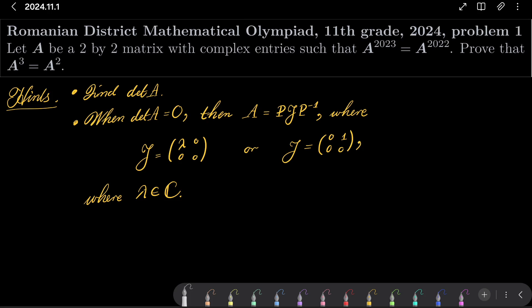But when the determinant is zero, then consider Jordan form of the matrix. So write that A equals P, J, P inverse, where J is either a diagonal matrix with lambda and zero on the diagonal, or it's an upper triangular matrix with zero, one, zero, zero, where lambda is some complex number. So give this problem a try and I will see you in just a minute.